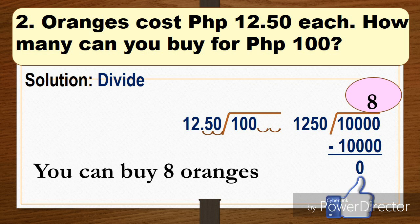...our new divisor is 1250, and then our dividend is 10,000. 10,000 divided by 1250. The answer is 8. 8 times 1250, the answer is 10,000. So if you subtract, the answer is 0. Therefore, the answer is 8. So you can buy 8 oranges with your 100 pesos.